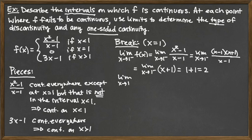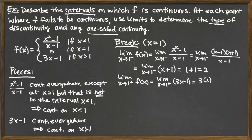The limit as x goes to 1 from the right — the plus sign tells us we need values slightly bigger than 1, which puts us into the bottom piece, 3x minus 1, since that's where x values slightly greater than 1 live. Since we have a line and lines are continuous everywhere, the one-sided limit matches the full limit, so we're looking at 3 times 1 minus 1, which equals 2. The right-hand limit is also 2.